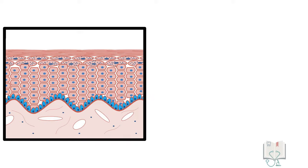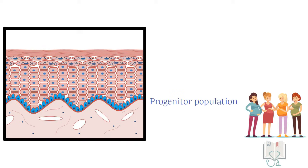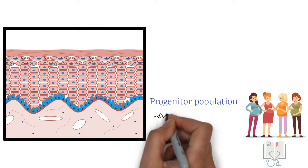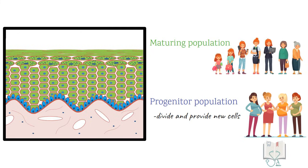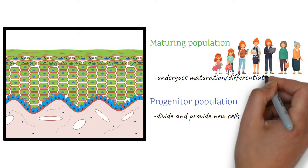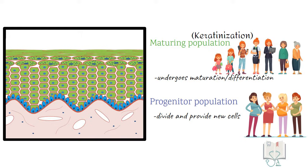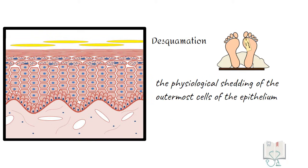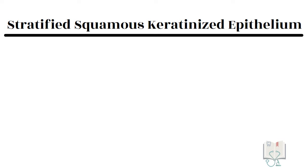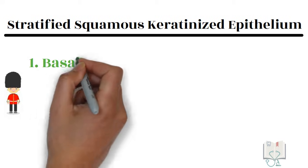This divides the cells of the oral epithelium into two populations. First, the progenitor population, whose function is to divide and provide new cells. Second is the maturing population, which continuously undergoes differentiation or maturation, also known as keratinization. Desquamation is the term given when the cells, after reaching the topmost layer, shed off.